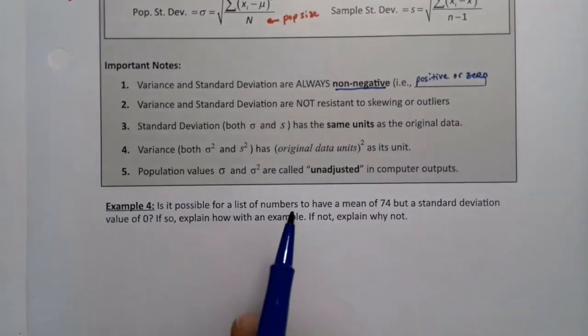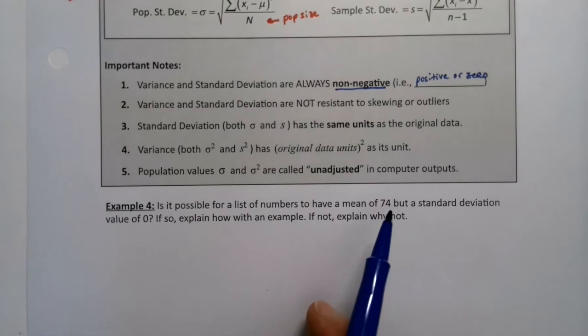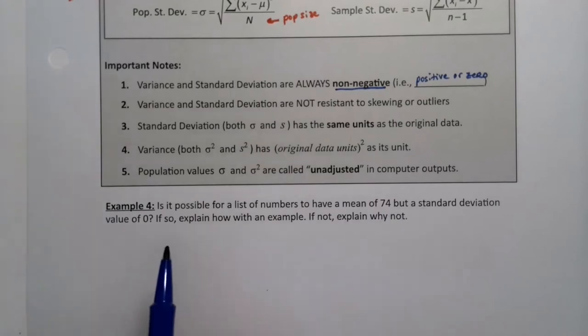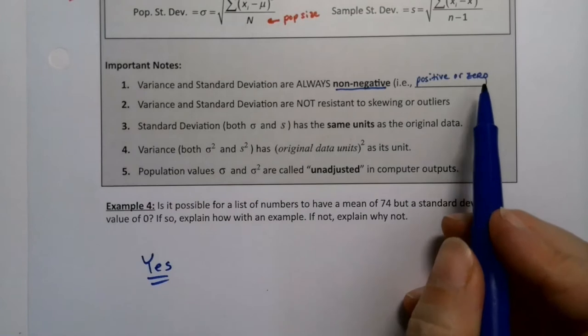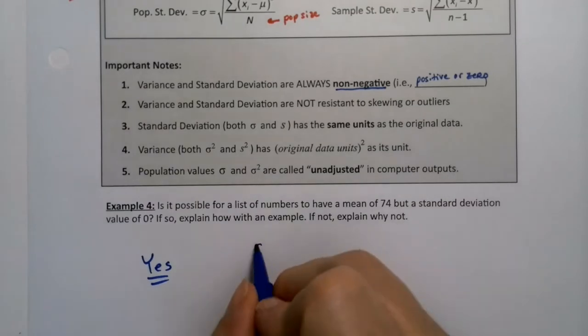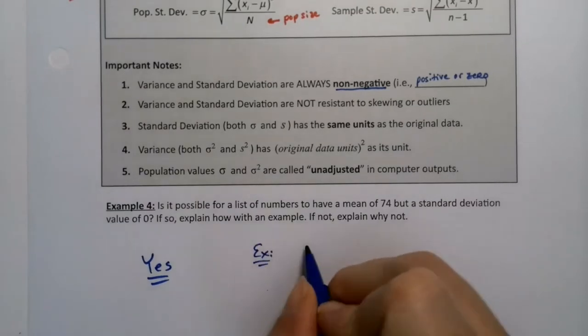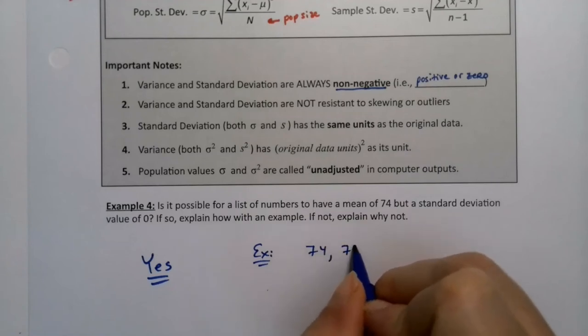Let's jump down to this example and we'll come back. So is it possible to have a list of numbers that have a mean of 74 but a standard deviation of zero? And the answer is yes. We just said we could have a standard deviation of zero. How would you do it? Well, let me give you an example.